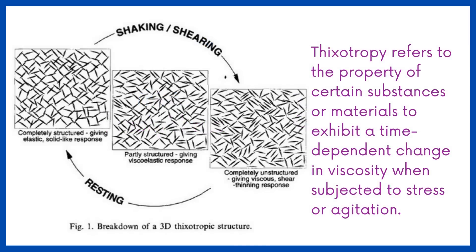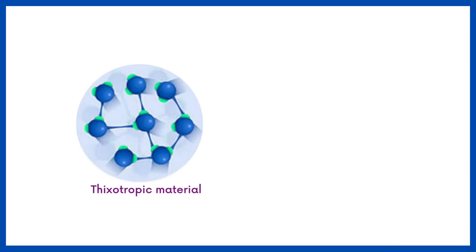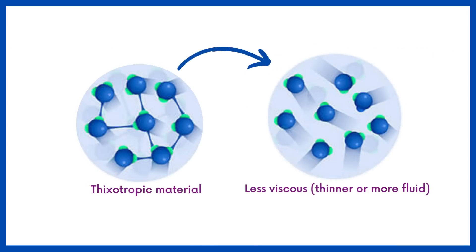Thixotropy refers to the property of certain substances or materials to exhibit a time-dependent change in viscosity when subjected to stress or agitation. In simpler terms, thixotropic materials become less viscous, or thinner or more fluid, when they are stirred, shaken, or subjected to shear stress.